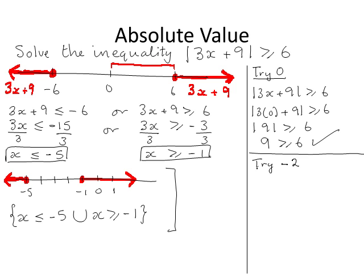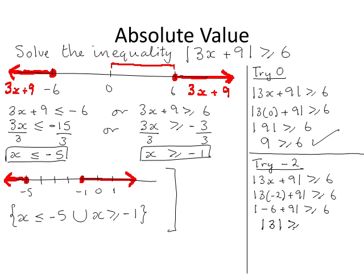Now we try a number that is not part of the solution set: minus 2. When we substitute this in we expect a false statement. We get the absolute value of 3 greater than or equal to 6. The absolute value of 3 is the distance between 3 and 0 on the number line, which is 3. So 3 greater than or equal to 6 is false, as expected. This is an example of solving an inequality with an absolute value symbol.